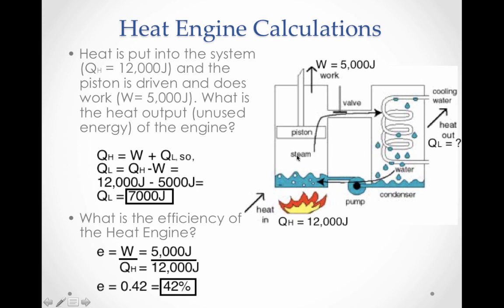And we want to know what is the heat output? The heat that comes out of the system and cools so we can condense the water to create more steam. This is our output heat, QL. So we have our heat engine equation: the high heat is equal to the work plus the low heat output. And so in this case we want to solve for QL, so we have to subtract the work from both sides. And the low heat is equal to the high heat minus the work, or 12,000 joules minus 5,000 joules of work that we did, is 7,000 joules of lost energy, unfortunately.